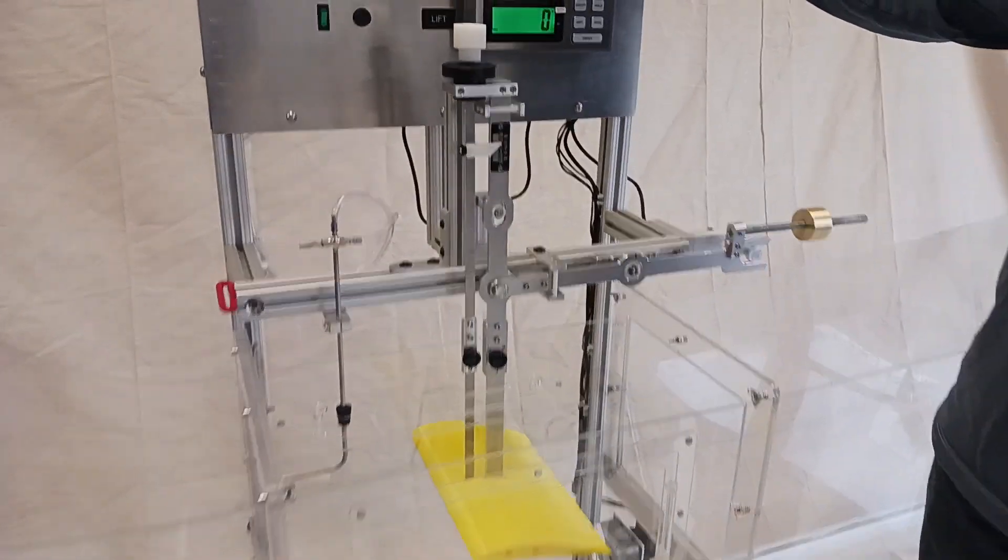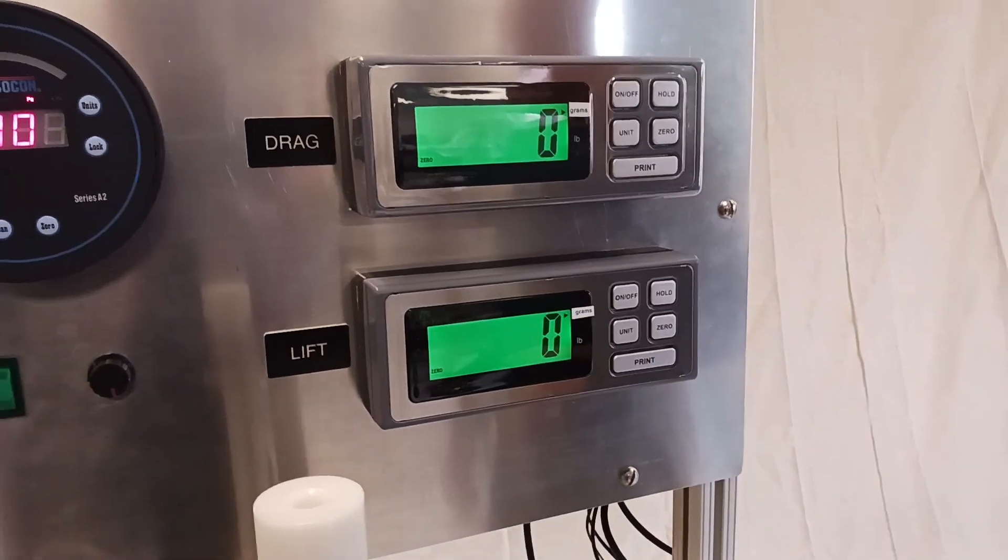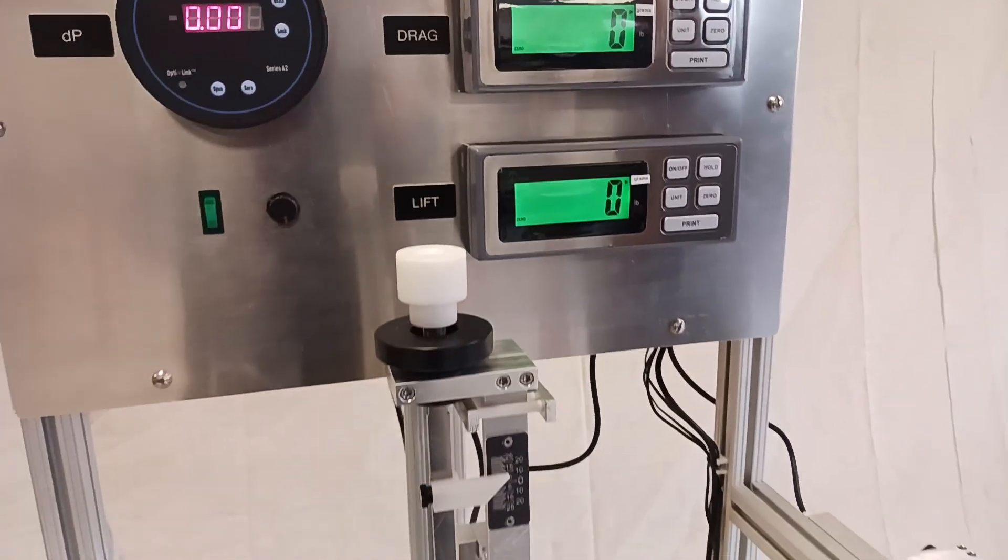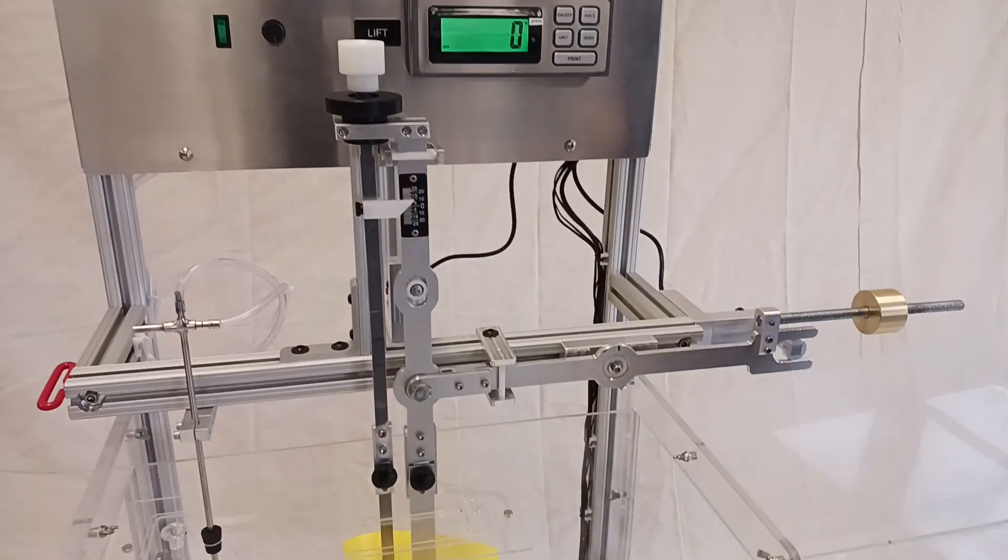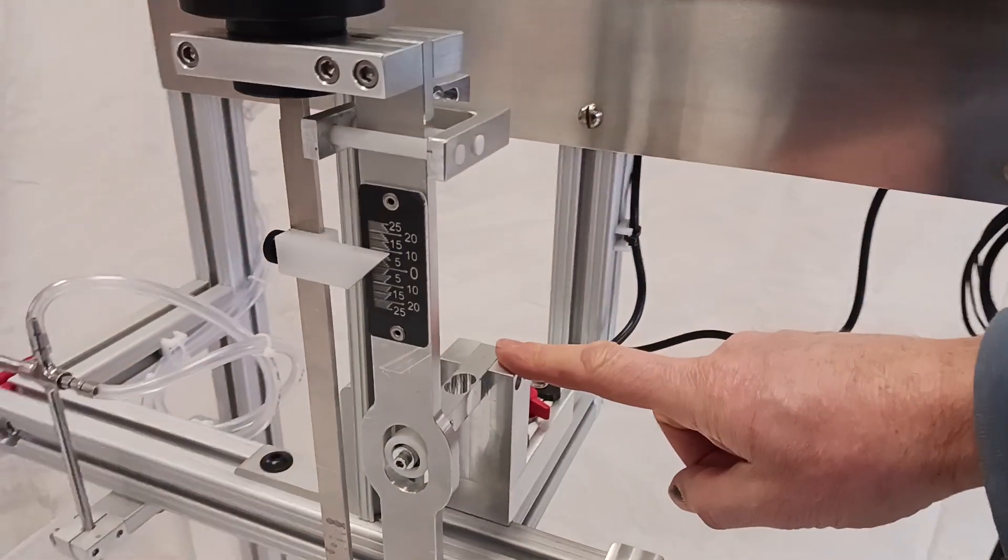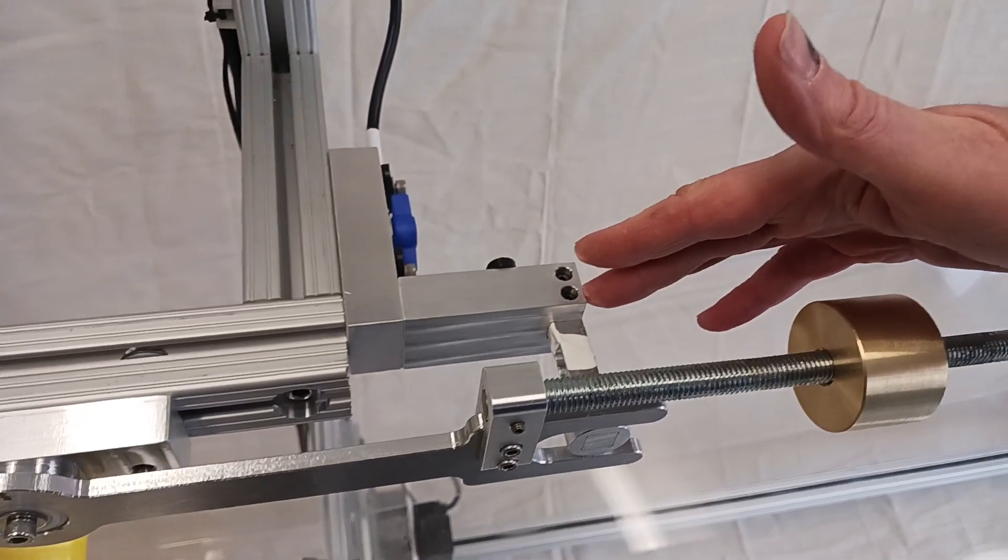Then we also have two displays for drag and lift. So these are measuring grams. And they are connected to load cells. And load cells measure weight. So there's one load cell here. This load cell is measuring drag. And then there's another load cell that's measuring lift.